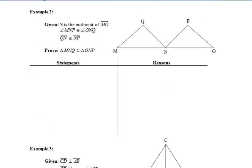Moving on to example 2, fill in the givens and mark tick marks on the diagram. N is the midpoint of the segment, which means we have two congruent segments. We're also given that angle MNP is congruent to angle ONQ, and that QN is congruent to NP. Thinking about the three methods, since QN and NP are sides and N being the midpoint gives another pair of congruent sides, and we have angles there, we'll prove these triangles congruent by SAS, since the angle is included between the two sides.